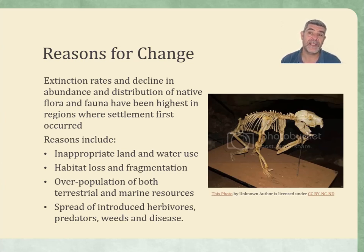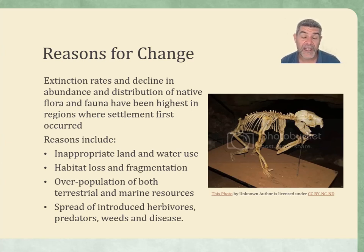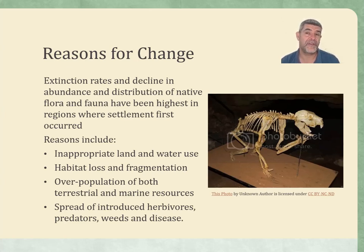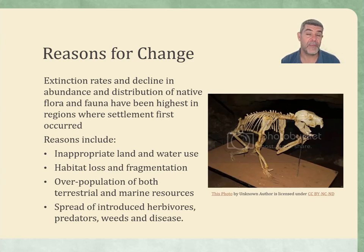Habitat loss and fragmentation is a particular issue — most famously associated with the koalas in Port Stephens. The continued clearing of land, the corridors that are trying to be left for the koalas to continue to survive — the fact that we have destroyed a lot of their habitat is really having an impact on their numbers and also their distribution.